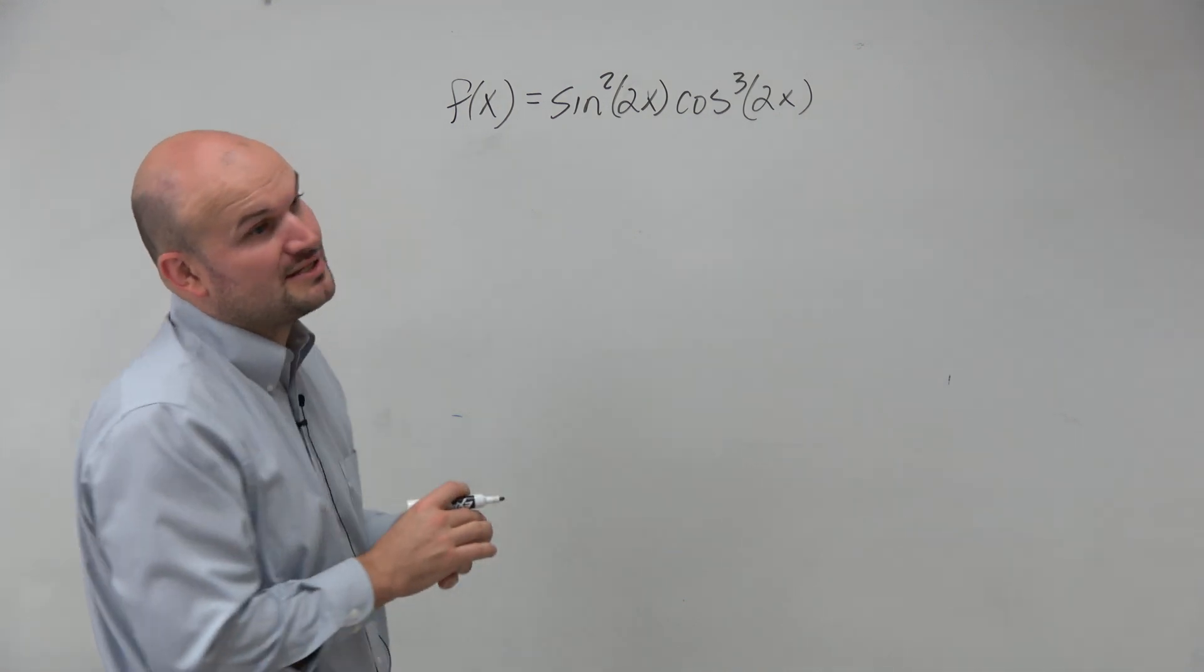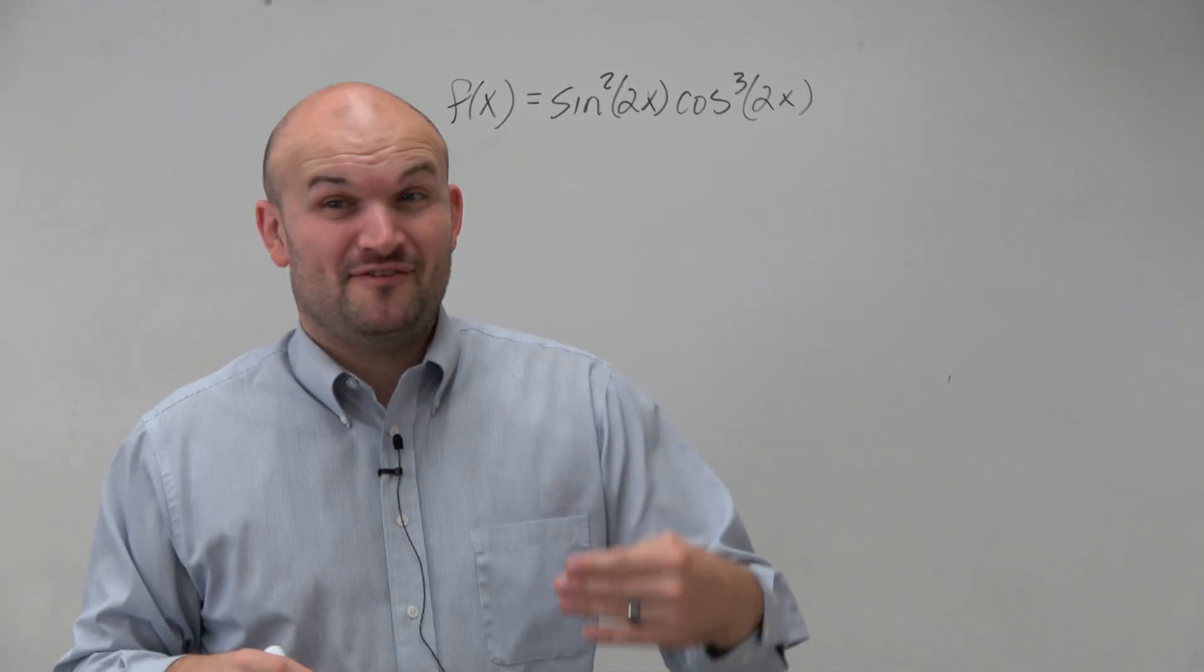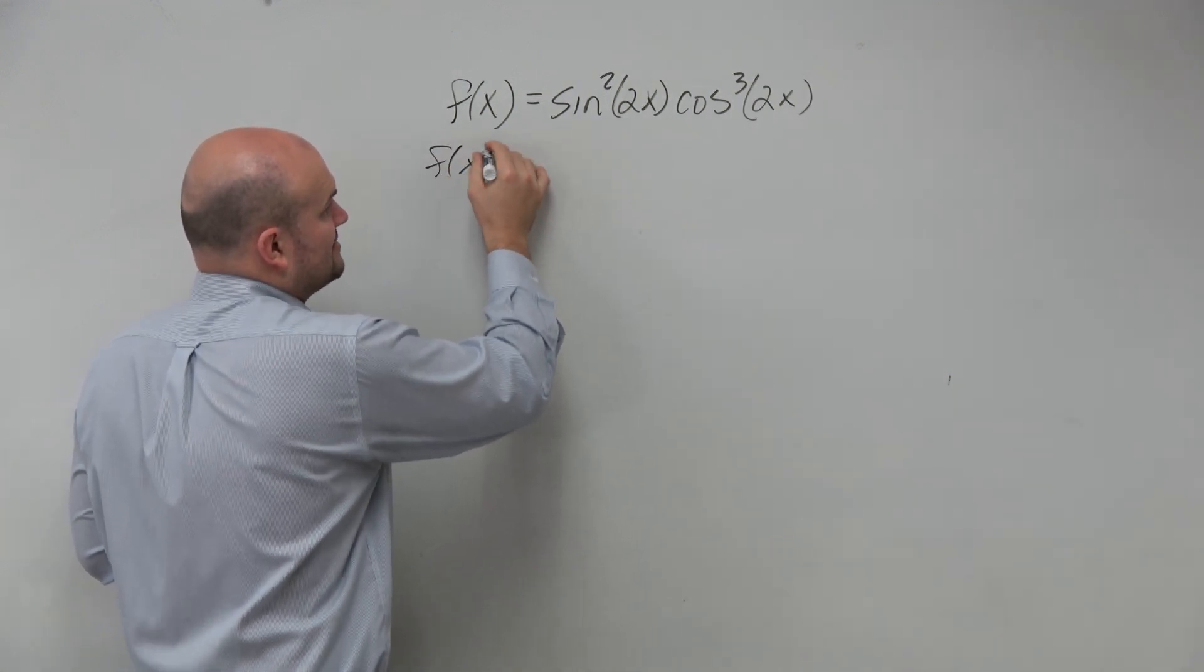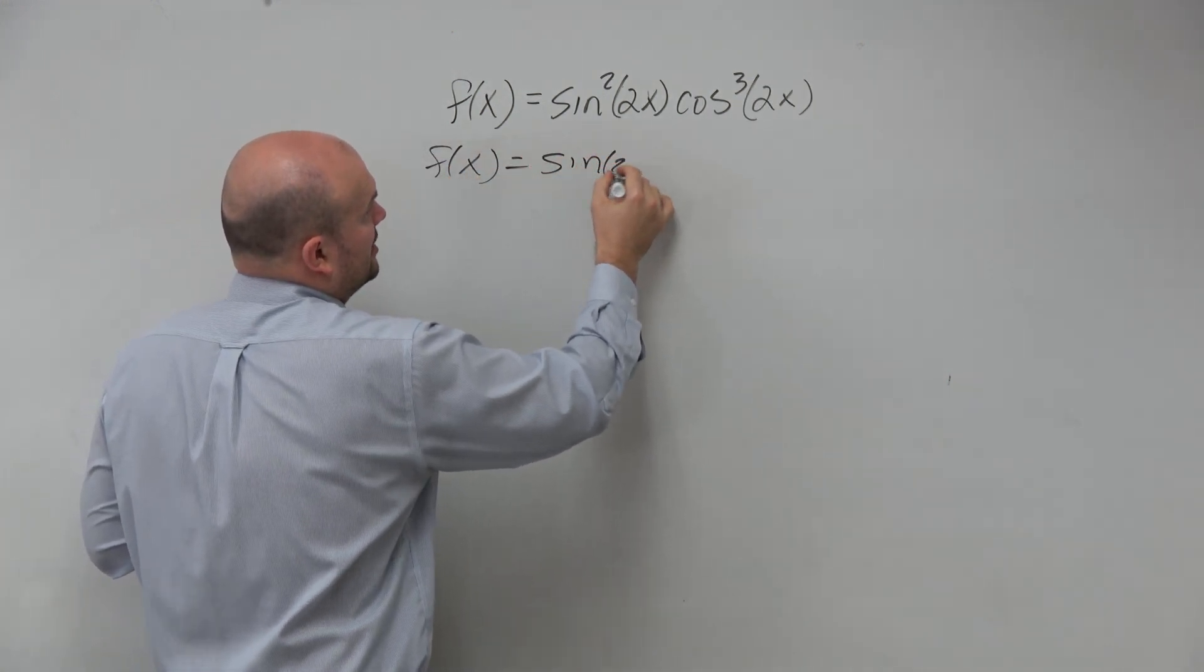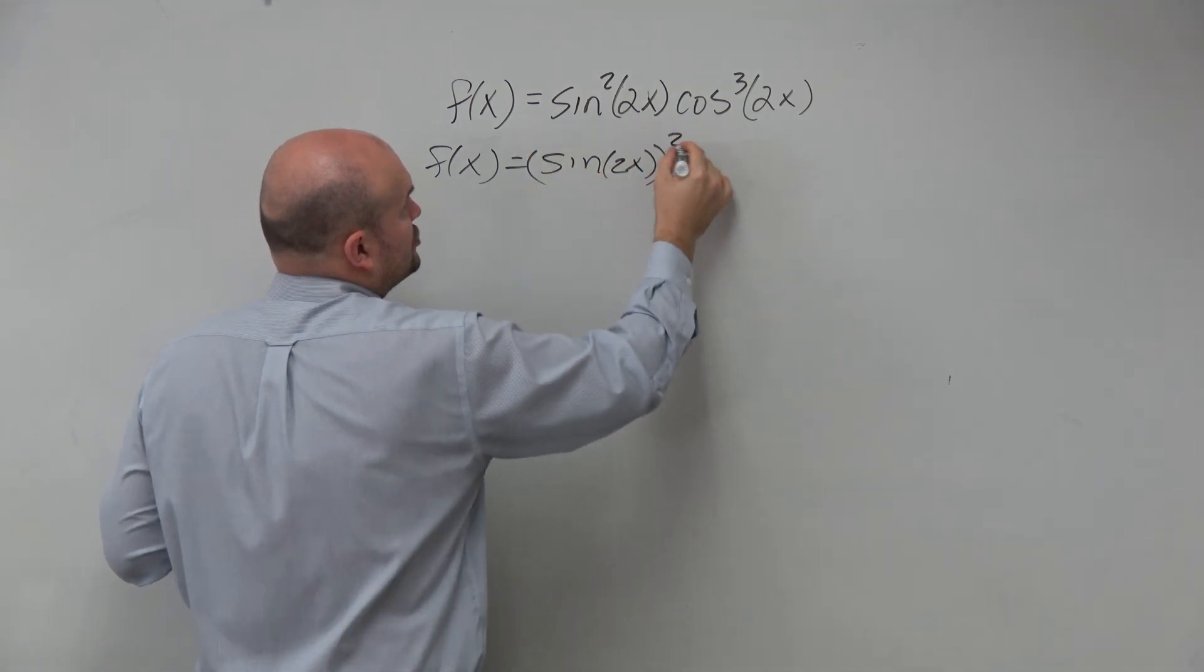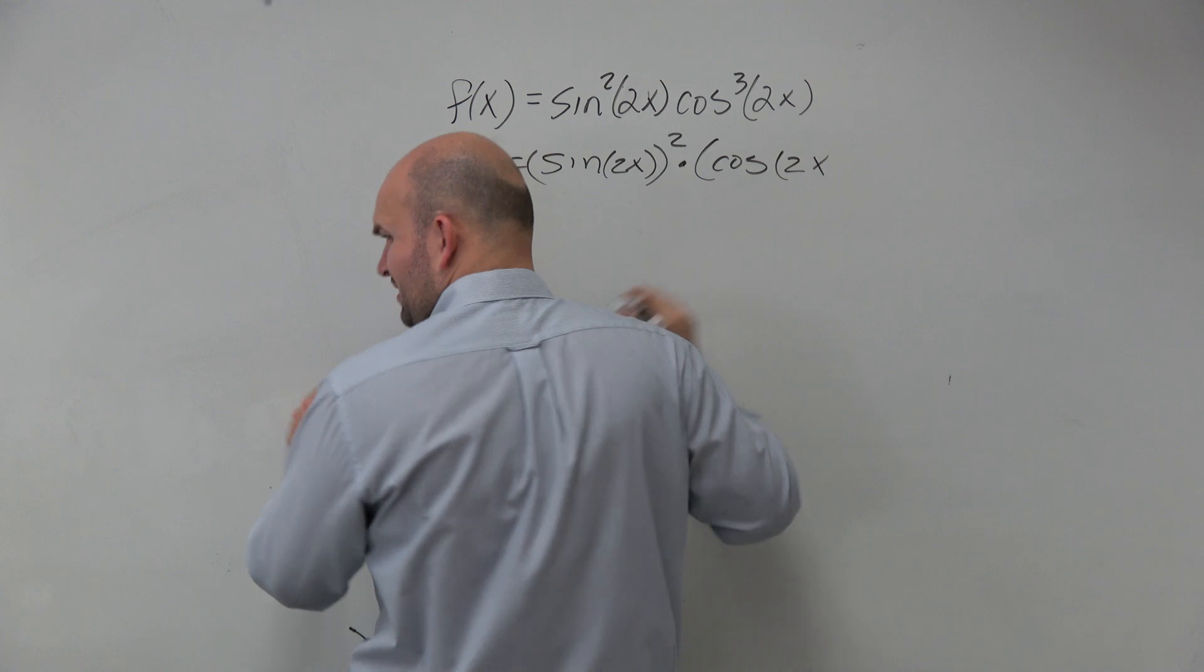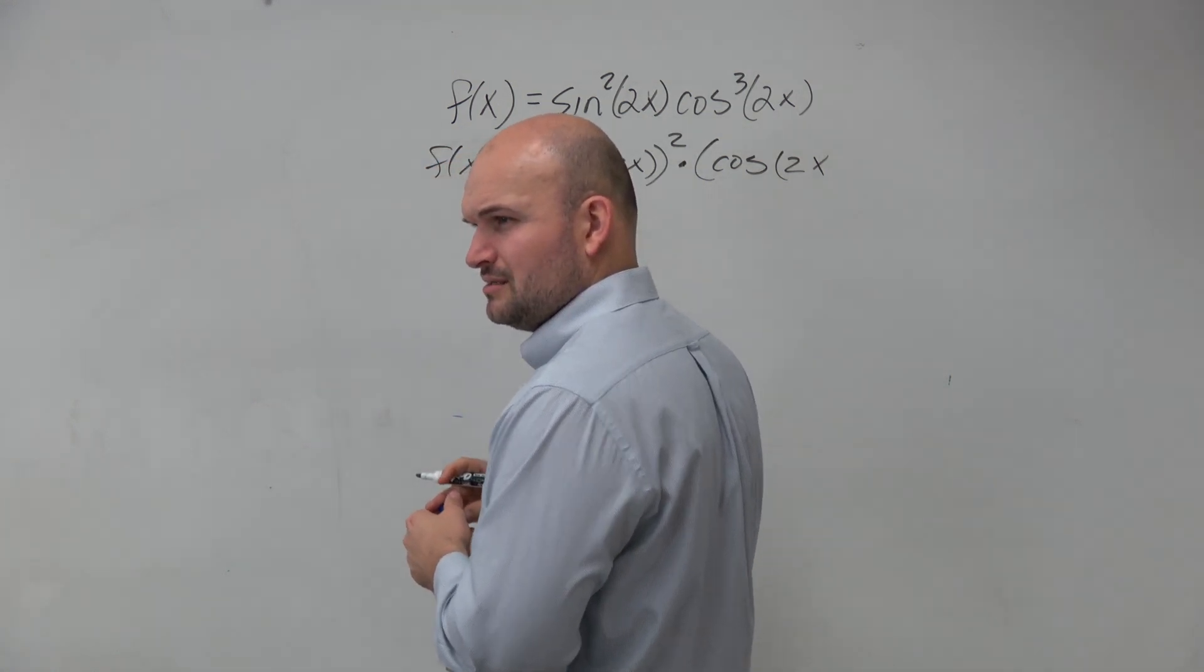Actually, sorry, this is product rule, and then we have double chain rule. Because in reality, you guys can think of the parent functions. We can rewrite this like this. It's sine of 2x squared times cosine of, was it 2x and 2x? Or is it 3x? 2x and 2x. OK.